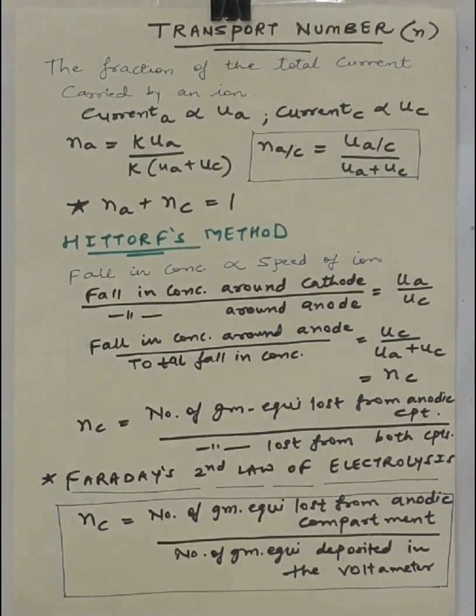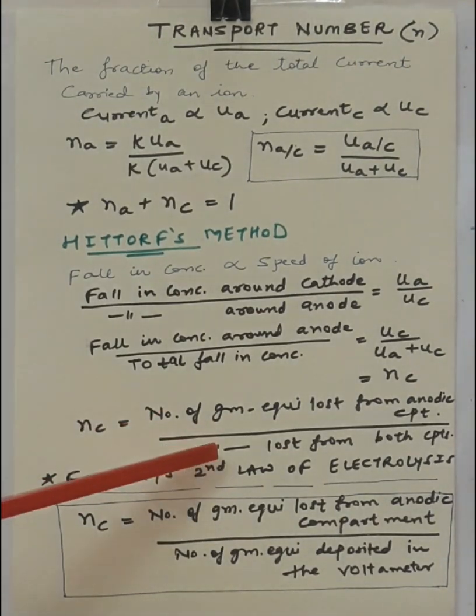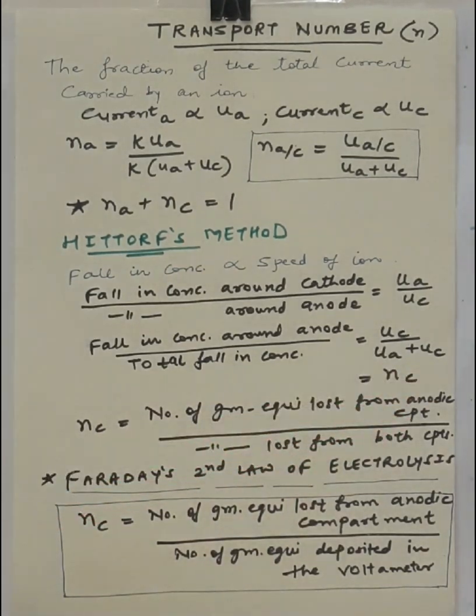To this, the other form again is if I apply Faraday's second law of electrolysis. What is Faraday's second law of electrolysis? It says when the same quantity of electricity flows through the silver or copper voltameter, the same number of gram equivalents of silver or copper will be deposited. Why we are taking this concept in this particular determination of transport number is because majority of the times it becomes difficult for us from the experimental setup to find out the number of gram equivalents lost from both the compartments.